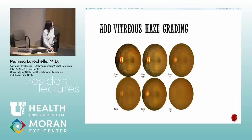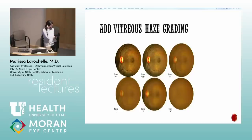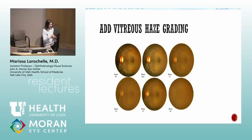Vitreous haze grading is done with the 20-diopter lens. You have the patient lying back and look with an indirect and a 20-diopter lens — that's how you officially grade vitreous haze. In clinic, I'll report anterior chamber cell and flare and may say two-plus vitreous cell, but I never give the haze score until I'm with the indirect.